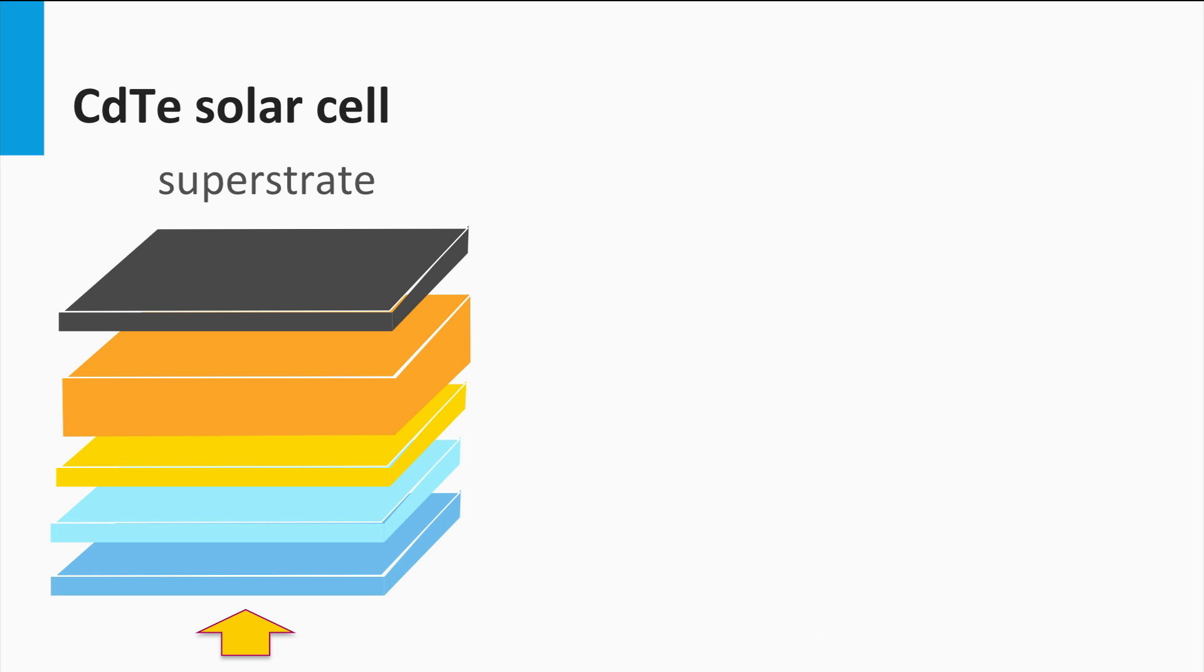A superstrate configuration is a cell concept in which the substrate on which the solar cell is processed acts as the front window at which the light enters the solar cell.